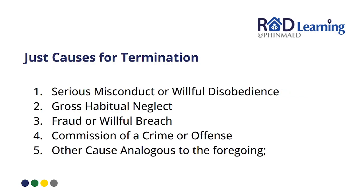Just causes for termination: first is serious misconduct or willful disobedience — for example, causing trouble in the workplace or disobeying orders from superiors. Second is gross and habitual neglect, meaning you are already neglecting your work. Third is fraud or willful breach — there is deceit occurring in relation to your work. Fourth is commission of a crime or offense — for example, insider trading. Other causes analogous to the foregoing also constitute just cause for termination.